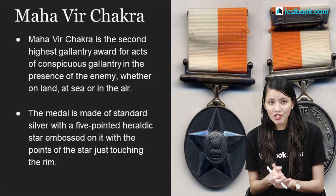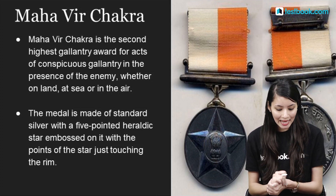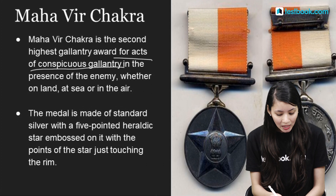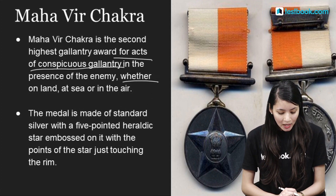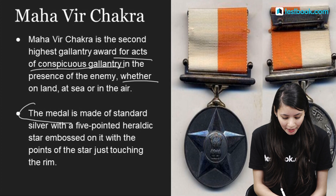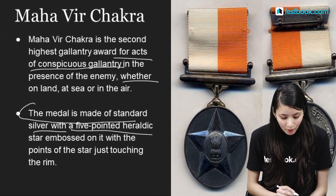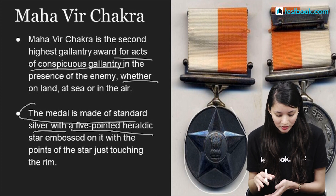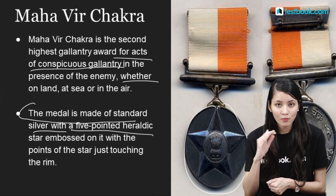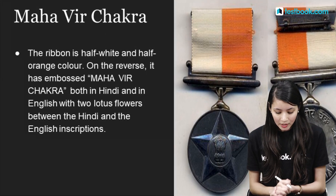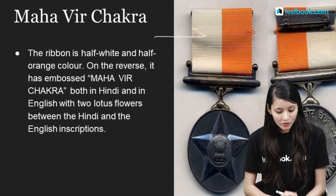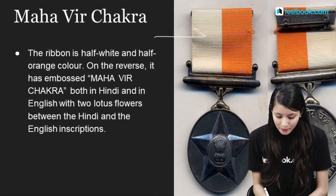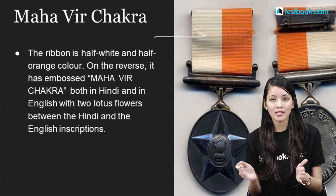Mahavir Chakra is the second highest gallantry award, also for acts of conspicuous gallantry in the presence of the enemy, whether on land, at sea, or in the air. The medal is made of standard silver with a 5-pointed heraldic star embossed, as you can see on screen, where the star points touch the rim of the medal. The ribbon is half white and half orange. On the reverse, 'Mahavir Chakra' is embossed in both Hindi and English, with two lotus flowers between the inscriptions.